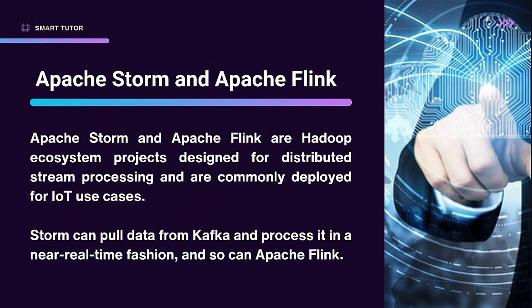Apache Storm and Apache Flink are Hadoop ecosystem projects designed for distributed stream processing and are commonly deployed for IoT use cases. Storm can pull data from Kafka and process it in near real-time fashion, and so can Apache Flink.